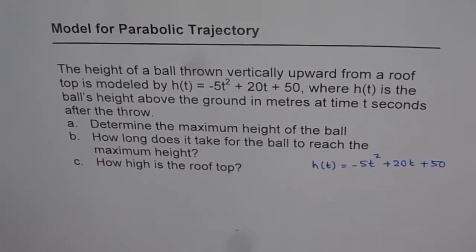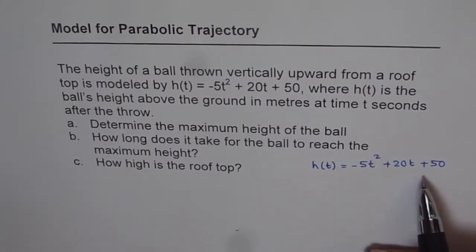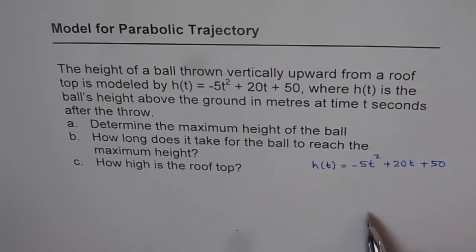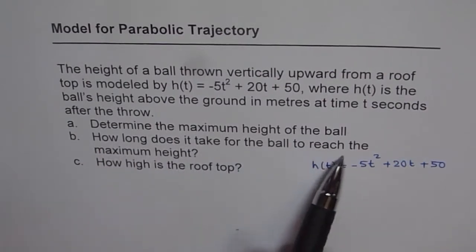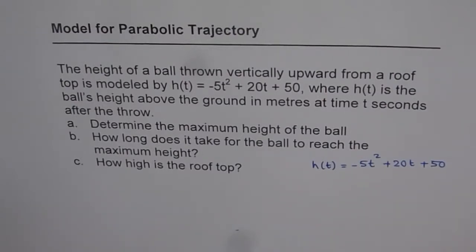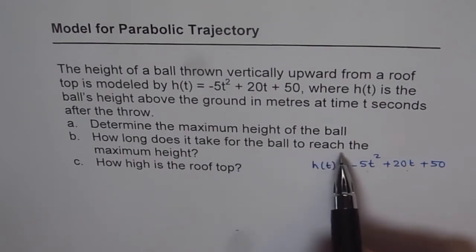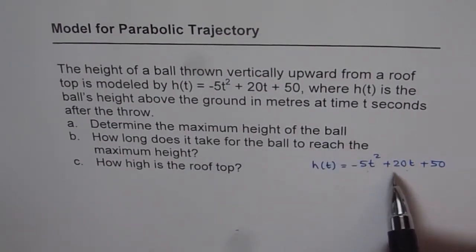In one of the videos, we have discussed four methods to find the maximum height. One of them is completing the squares. You can complete the squares and get maximum height and you will also get the answer for part B, which is how long does it take for the ball to reach the maximum height. You could also do partial factoring. That means factor these two out and then get first how long does the ball take to reach the maximum height and then plug in that time and get the maximum height.